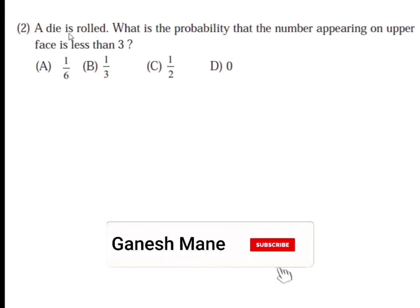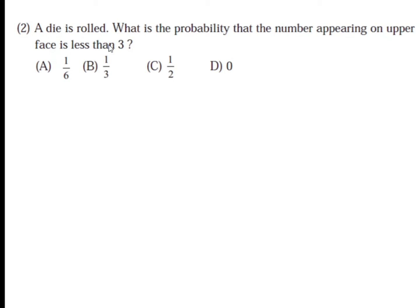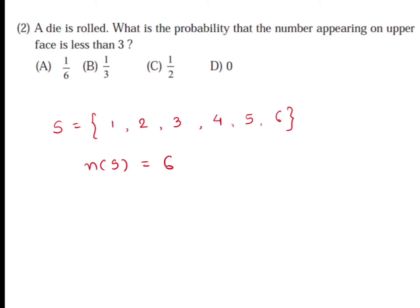Second question: a die is rolled. What is the probability that the number appearing on the upper face is less than 3? Options are 1/6, 1/3, 1/2, or 0. To solve this we write the sample space S. A die has 6 surfaces, so we can get numbers 1, 2, 3, 4, 5, or 6 on the upper face. The number of sample points N(S) is equal to 6.